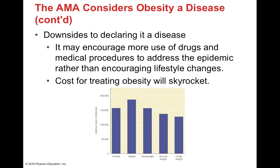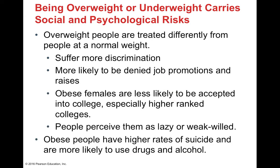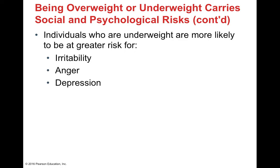In 2013, obesity became such a problem in America that the AMA declared obesity a disease. The benefits of declaring it a disease include clear health hazard warnings, guaranteed insurance coverage for treatment, and research funding for this drastic problem. However, when something is called a disease, individuals may say it's not their fault and nothing can be done, potentially turning to drugs and medical procedures instead of lifestyle changes, which is really where the problem lies. The costs for treating obesity are rising and only going to skyrocket. There's also discrimination associated with being overweight — overweight people are more likely to be denied job promotions and raises, less likely to be accepted into higher-ranked colleges, and have higher rates of suicide and alcohol and drug dependency.